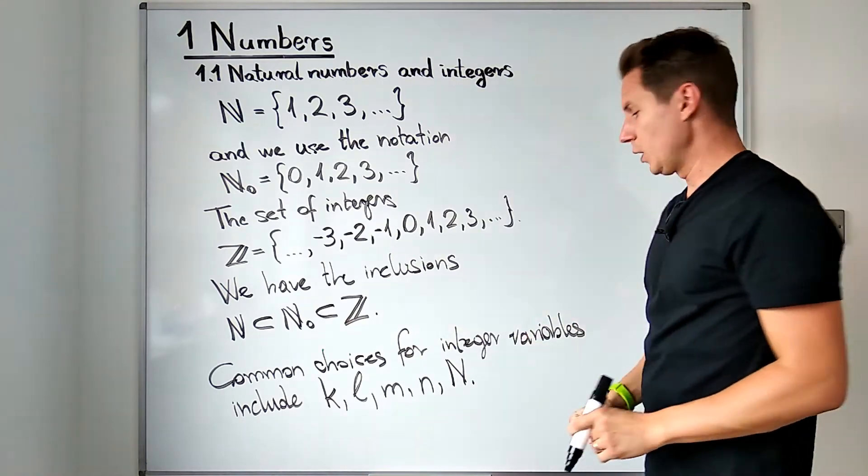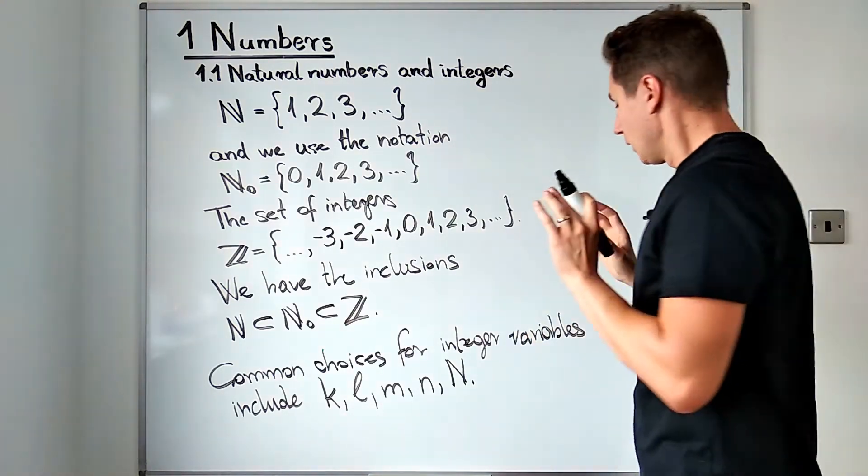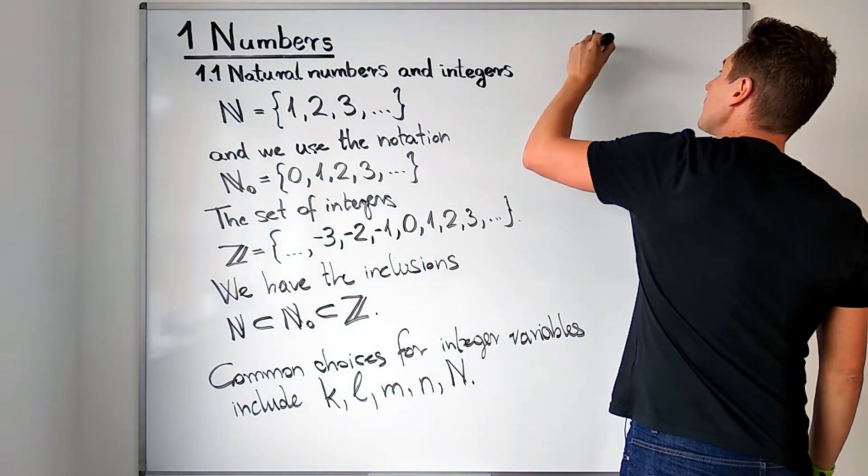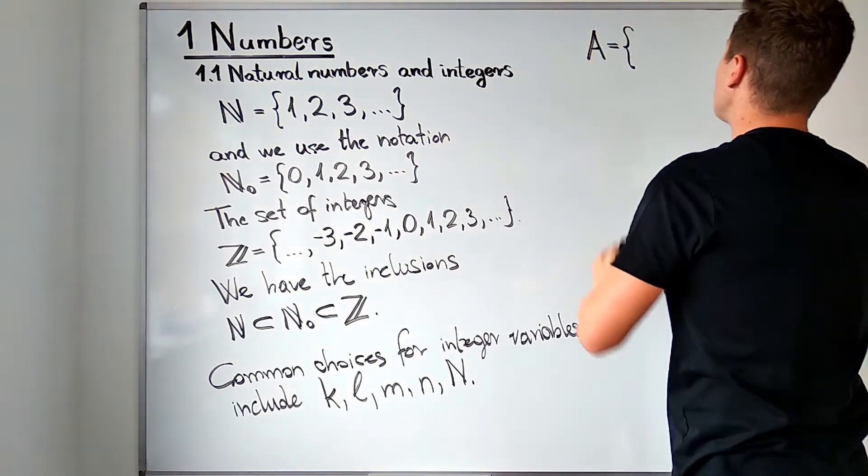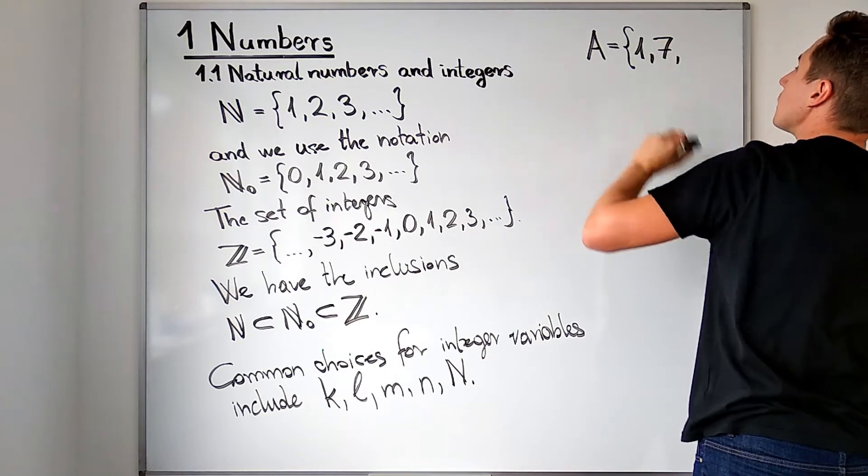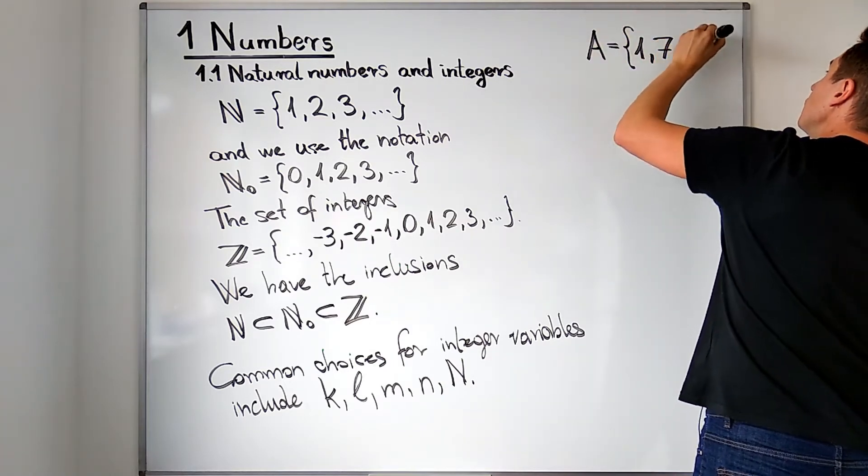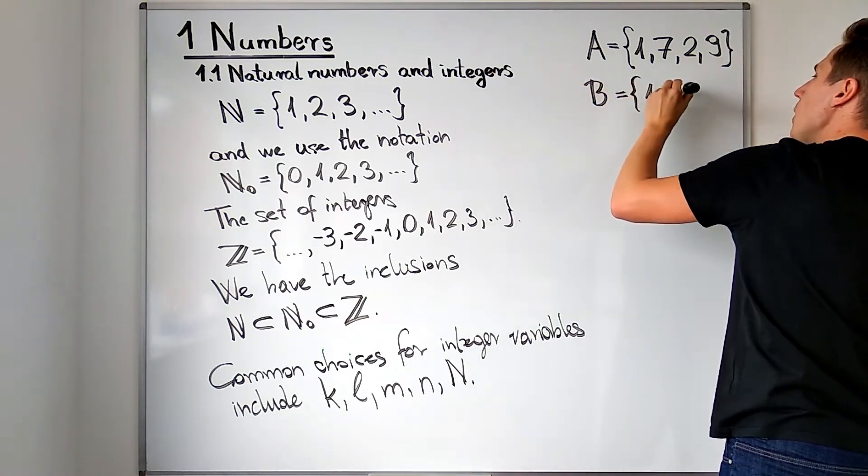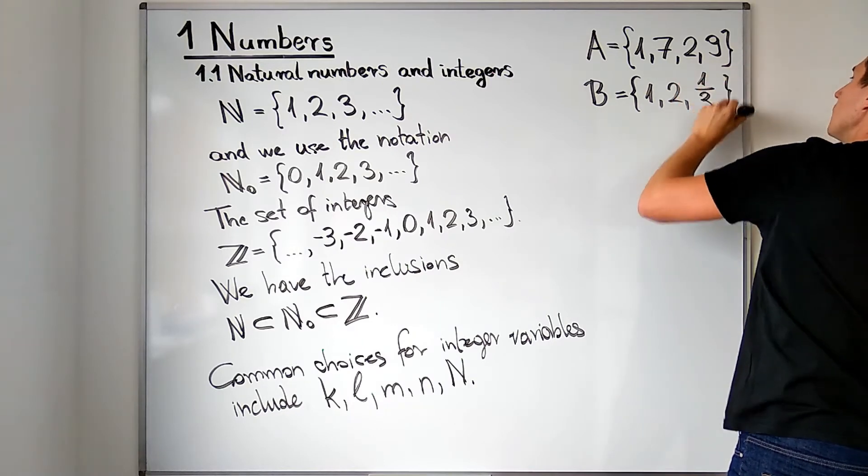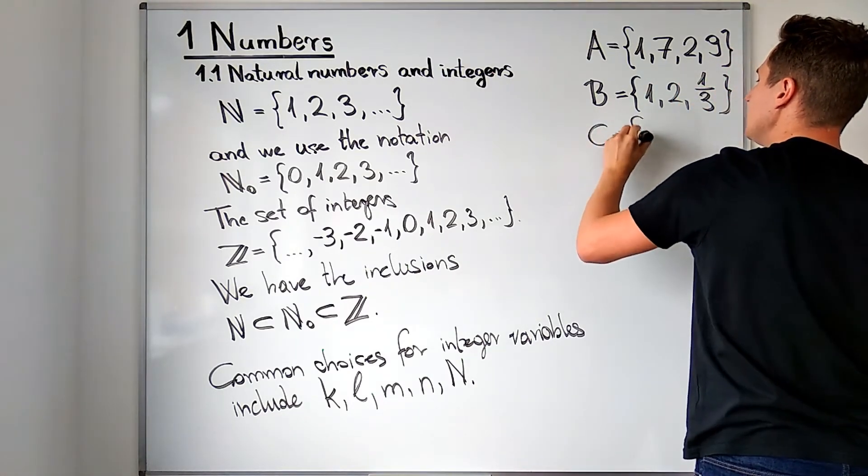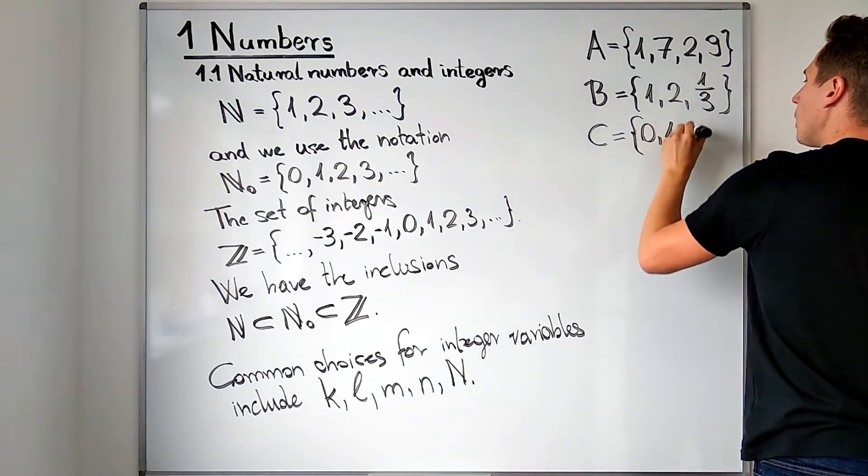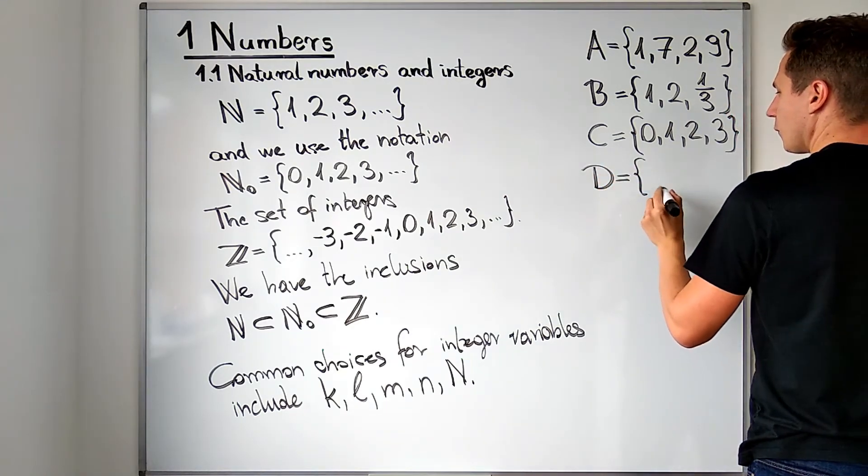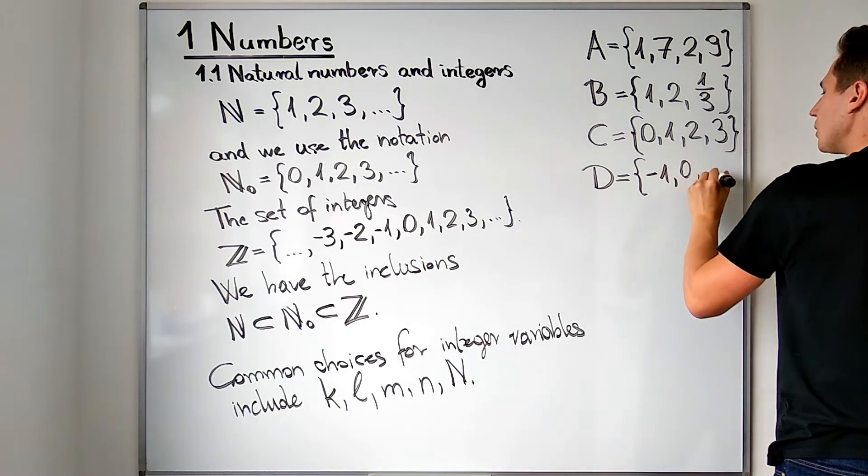And to end this video I would like to test your knowledge, so I will give you four sets of numbers. The first set, set A, will contain the integers 1, 7, 2 and 9. The second set, set B, will contain the numbers 1, 2 and 1/3. Set C will contain the numbers 0, 1, 2 and 3. And finally set D will have for its elements minus 1, 0 and plus 1.